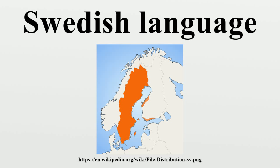Old Swedish is the term used for the medieval Swedish language. The start date is usually set to 1225, since this is the year that Västgötalagen is believed to have been compiled for the first time. It is among the most important documents of the period, written in Latin script and among the oldest Swedish law codes. Important outside influences during this time came with the firm establishment of the Christian Church and various monastic orders, introducing many Greek and Latin loanwords.